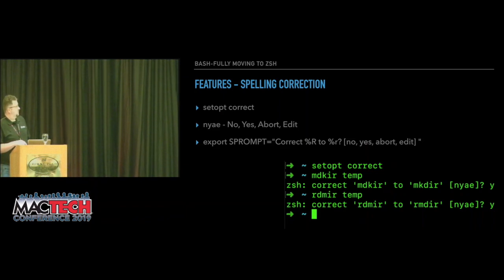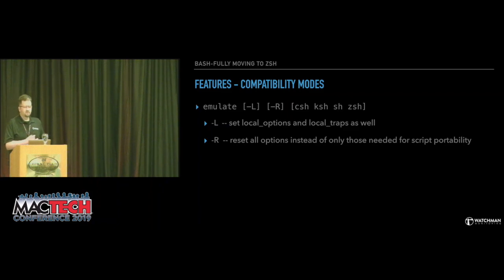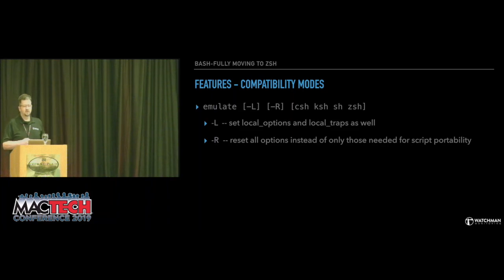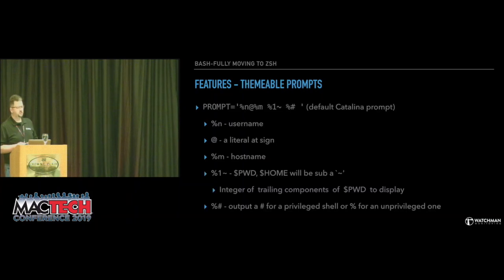Same thing with `rmdir`. You also have the ability with ZSH to emulate other shells — helpful if you're going to Stack Exchange and borrowing code you don't want to convert to Z shell. You can actually emulate a section of code and basically pretend to be csh, Korn shell, C shell, Bourne shell, or ZSH itself. This can be helpful if you've got some other scripts you may want to test but want to stay in your current shell.